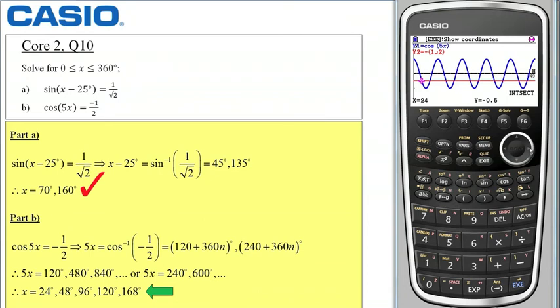And as I scroll to the right: 48, 96, 120, 168. Now there seem to be more solutions. In actual fact if I scroll to the right I get 192, 240, 264, 312 and 336.